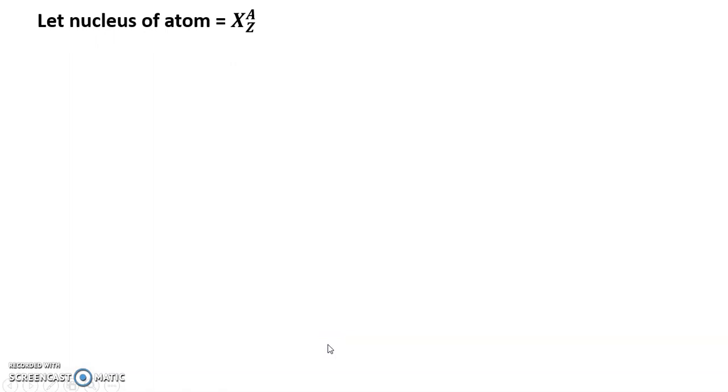Let nucleus of atom equal X, A is mass and Z is proton. So let us calculate the mass defect in case of the nucleus and atom Z X A. The nucleus of such atom contains Z protons and A minus Z neutrons.